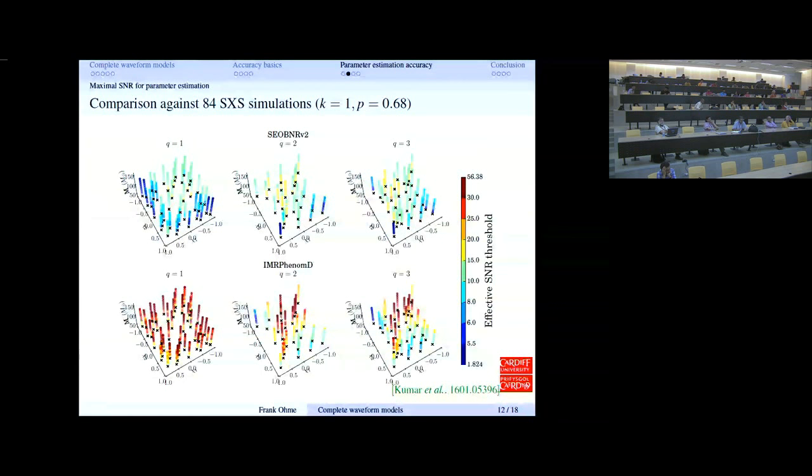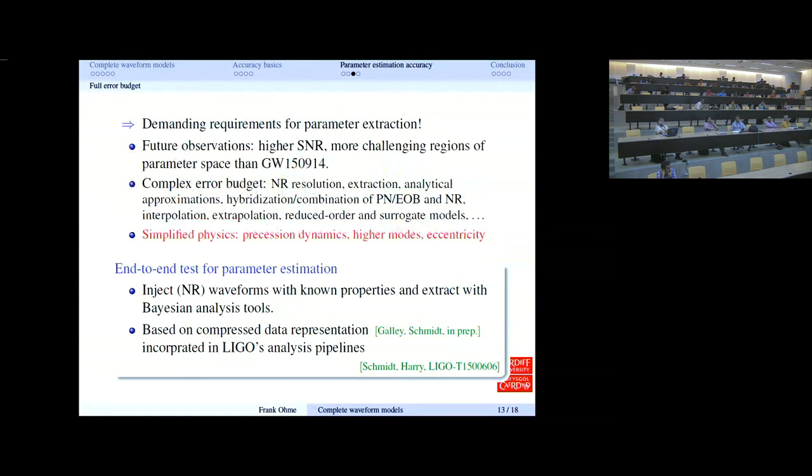Moving on to slide 13. Parameter estimation has a lot more demanding requirements for waveform models. We should expect in the future signals with higher SNRs and more challenging regions than the parameter space region around GW150914. In some sense, it can't be less challenging—this was the optimal starting signal. But the error budget is complex. In these waveform models, a lot of individual ingredients go in, each coming with a certain error. Harold has mentioned numerical resolution and waveform extraction. There are analytical approximations, errors in how we combine these models, interpolation, and so on. Each comes with some sort of mismatch. In principle, we could quantify, but then it becomes hard to interpret what is really happening. A thing that I haven't mentioned so far, but I'll talk a little bit about towards the end, is that these models use some simplified physics.